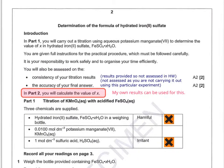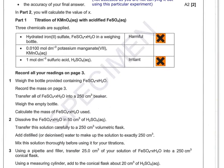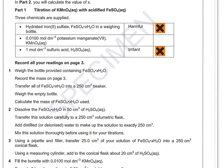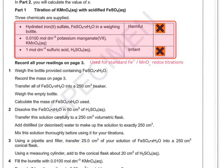So let's have a quick look at the procedure. Moving the page down, you can see that you've got three chemicals that are supplied. So these chemicals are used for all standard Fe²⁺-MnO₄⁻ redox titrations. So they've been risk assessed by OCR at this concentration.